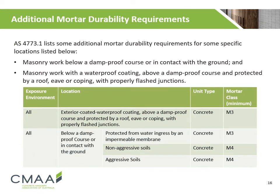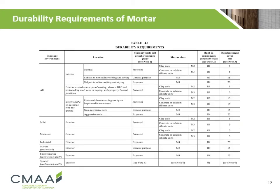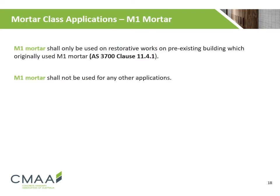AS4773.1 lists some additional mortar durability requirements for specific locations, including masonry work below a damp proof course or in contact with the ground, and masonry work with a waterproof coating above a damp proof course that is protected by a roof. The minimum mortar classes for these conditions are listed below and are collectively summarised in Table 4.1 of AS4773.1. M1 mortar shall only be used on restorative works on pre-existing buildings which originally used M1 mortar, and shall not be used for any other applications.